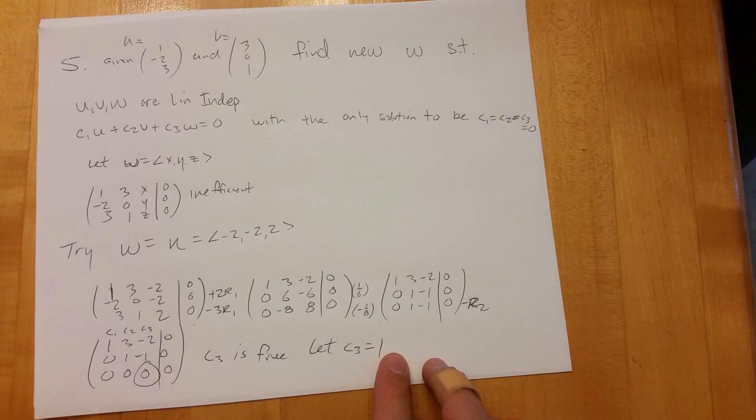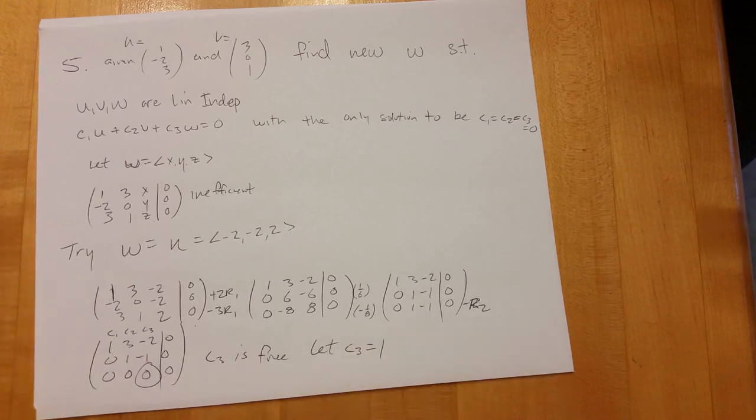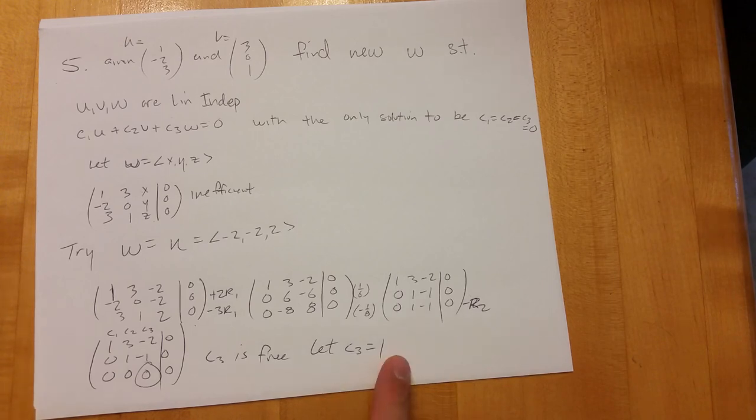A non-trivial solution means there's at least one coefficient that's not zero, and here's one coefficient that's not zero. And where do you get one off there? I picked it. I just picked it. The only bad number to choose would be let c3 equals zero, because that may come back and have the other two be zero also.